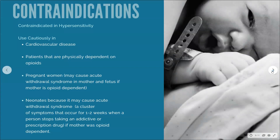What are the contraindications for naloxone? The main one is hypersensitivity — if you're allergic to the drug, that's a contraindication. This drug should be used cautiously in people with cardiovascular disease, people physically dependent on opioids due to the possibility of withdrawal, pregnant women — because it may cause acute withdrawal syndrome in the mother and fetus if the mother is opioid-dependent — and in neonates as well, since it may also cause acute withdrawal syndrome.